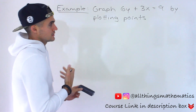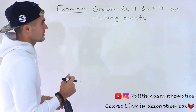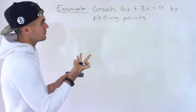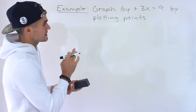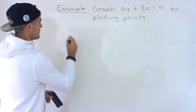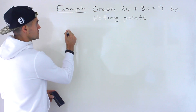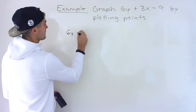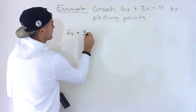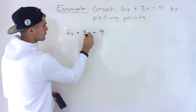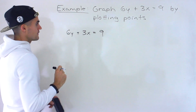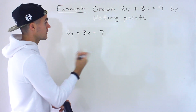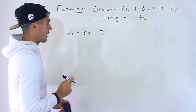There are a couple of different ways you can go about this. You could put it in y equals mx plus b form if you want and isolate for y. What I'm going to do is keep it in this format, pick a couple of random x values, and then solve for the corresponding y value.